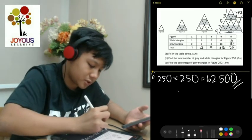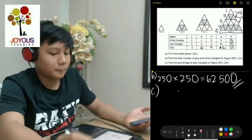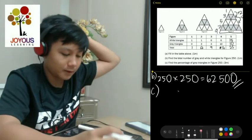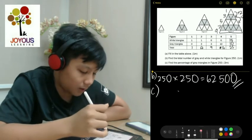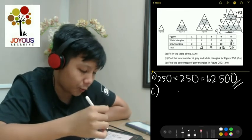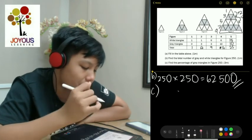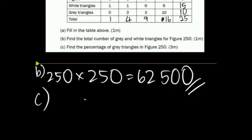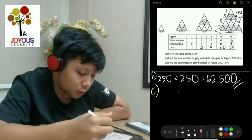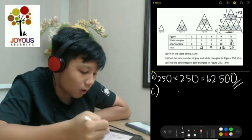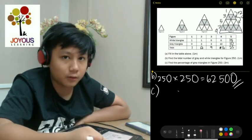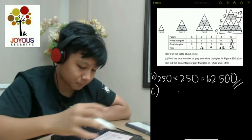Now question C. Find the percentage of gray triangles in figure 250. Now if you see the graph properly, in an odd figure, the number of white triangles will be more than gray. And in the even figures, the number of gray will be more than the white triangles. So since 250 is an even number, it means that there is more gray than white. And also, in figure 2, there are two more gray triangles than white triangles, which is also the figure number. That also applies for figure 4. 10 minus 6 is also 4.